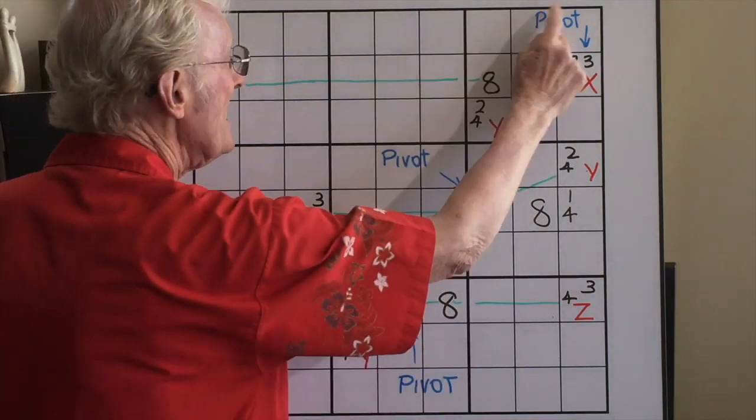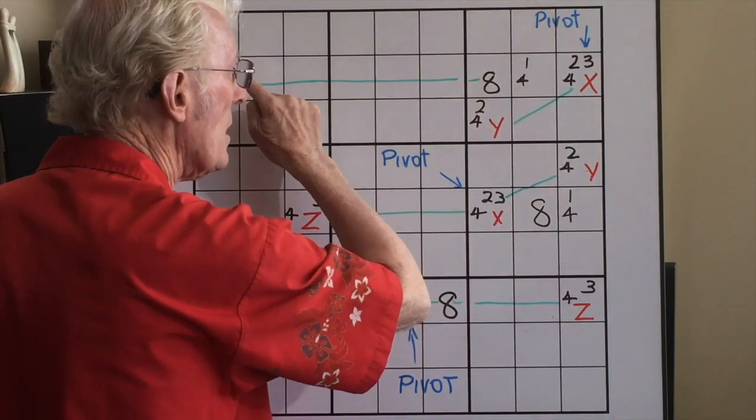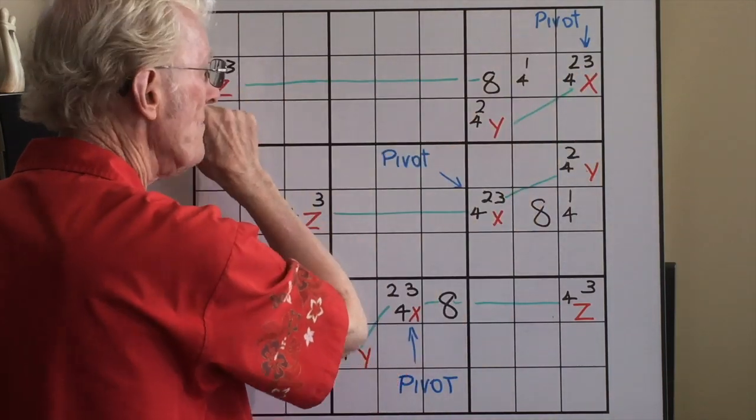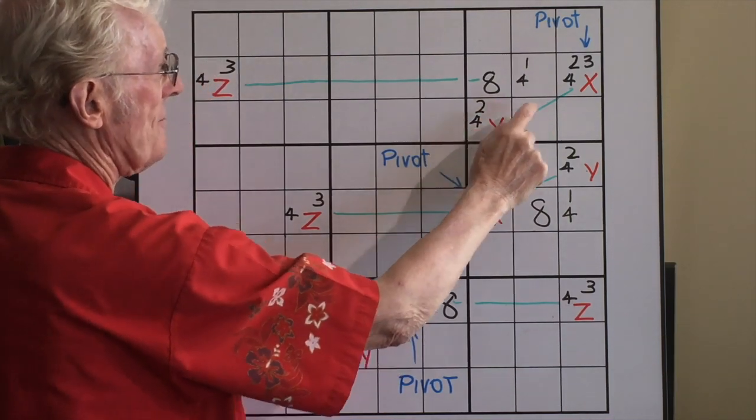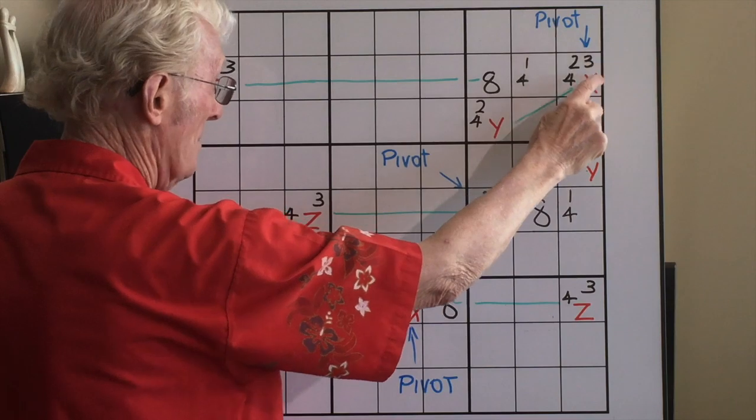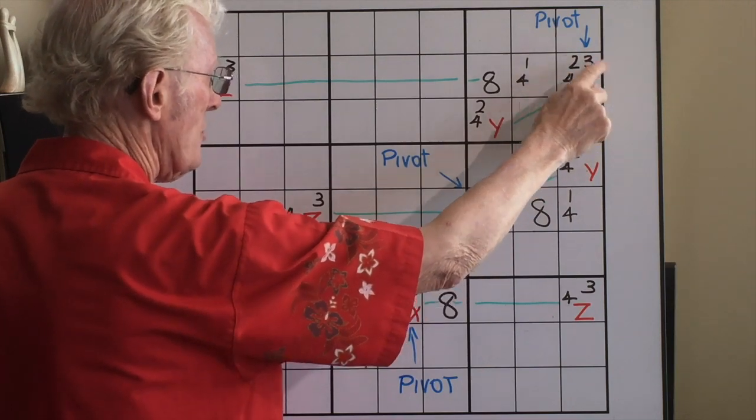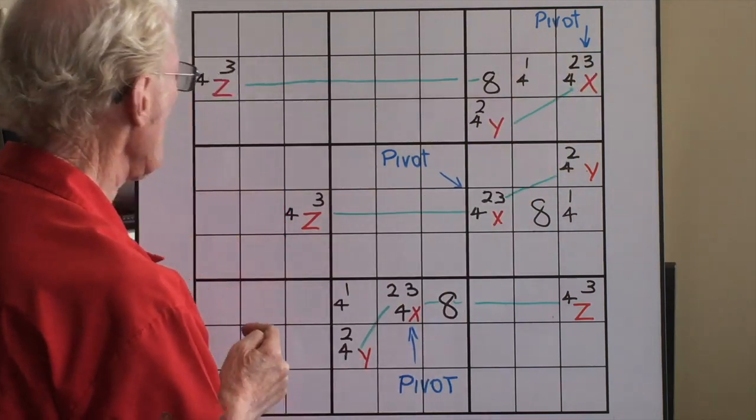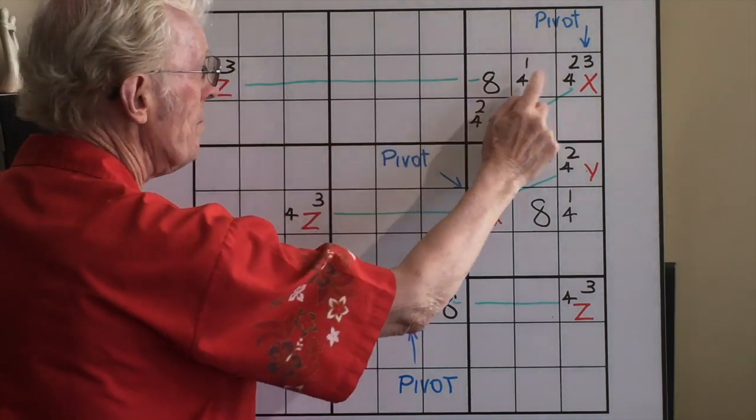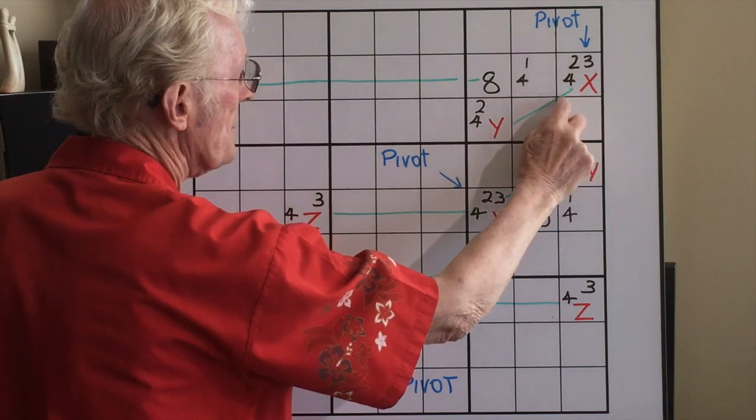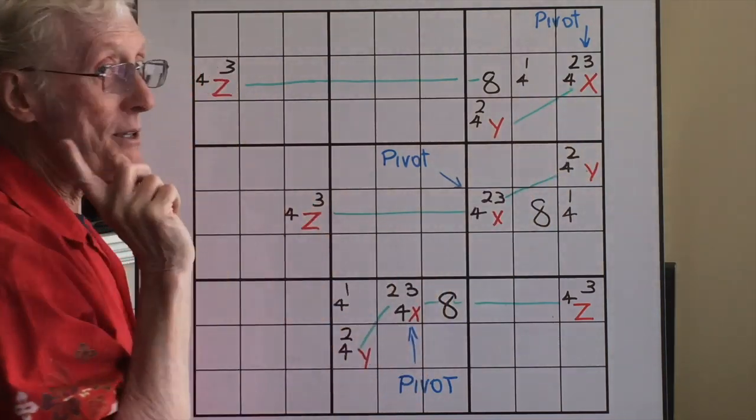I've also found in this block, but not in the same row as the two, three, four here, a Y, which is these two numbers, similar to fit in with these two, three, fours. And now down here, we found a three, four, which is also part of this two, three, four.